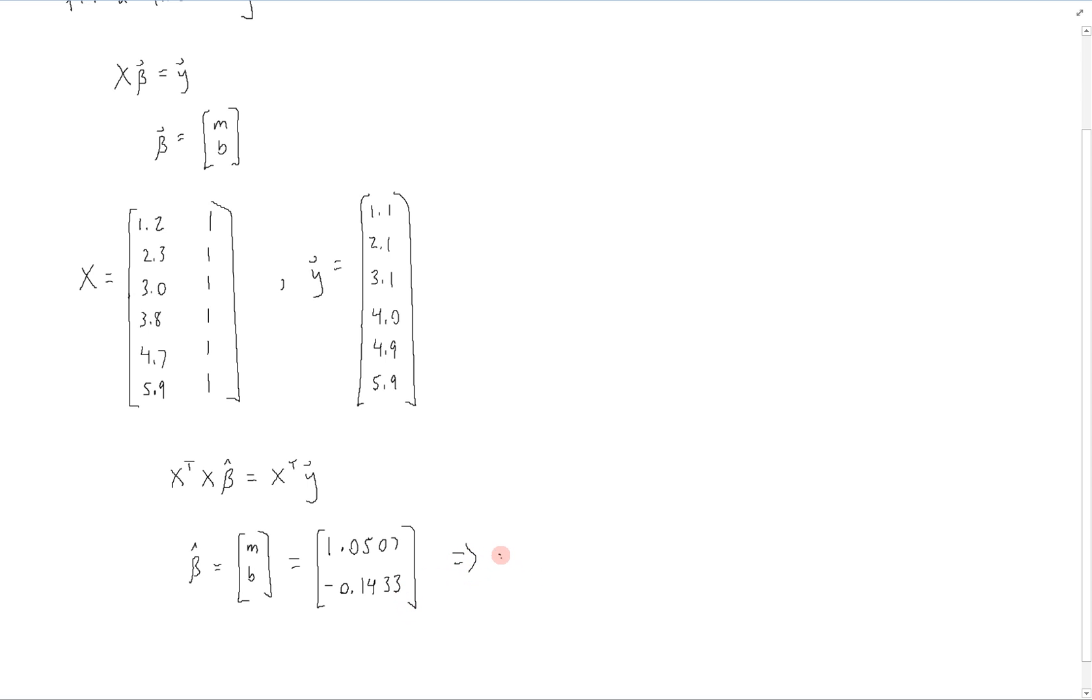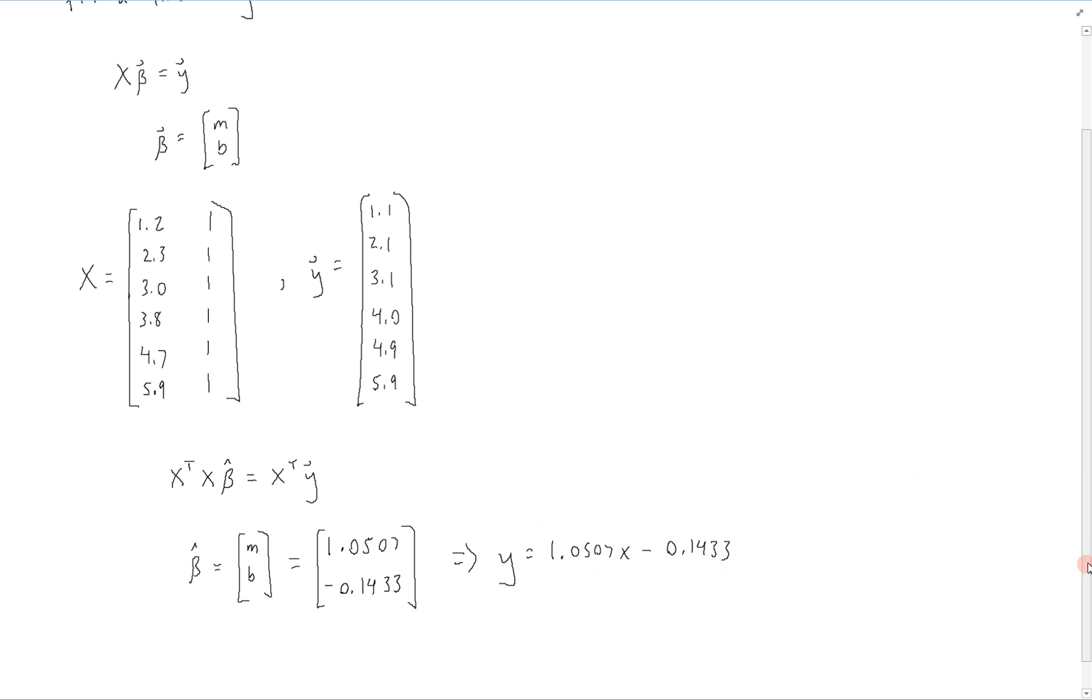This means that our model is y equals 1.0507x minus 0.1433. So this is the best fit line to the data that we have.